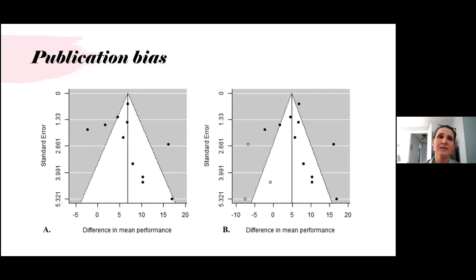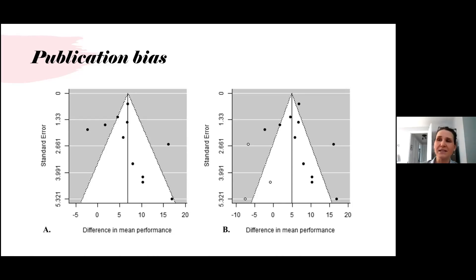We also looked at publication bias, though these results should be taken with a grain of salt given our small pool of studies. The funnel plots show whether there are any studies potentially missing that would have concluded unfavorable effects for the flipped class. In the absence of publication bias, a funnel plot should be symmetrical, with high-precision studies clustering close to the pooled estimate while low-precision studies disperse widely and evenly on both sides.